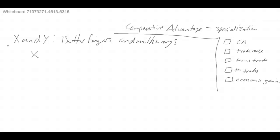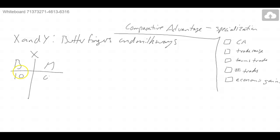We have Butterfingers and we have Milky Ways. Company X: if they specialize in Butterfingers, they can make 10 Butterfingers and zero Milky Ways. And if they specialize in Milky Ways, they'll have zero Butterfingers and 20 Milky Ways. And if they do a little bit of both, they have five and five.